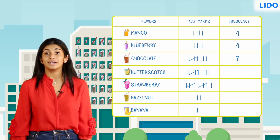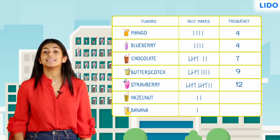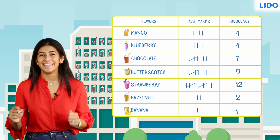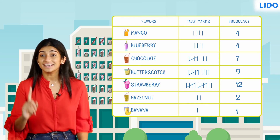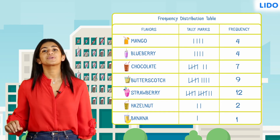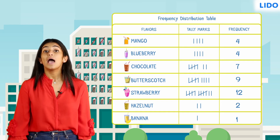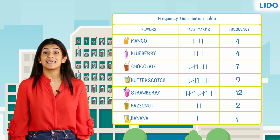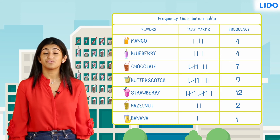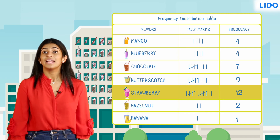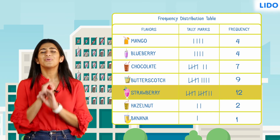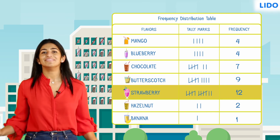Using the same method, we will complete the rest of the table. This is called a frequency distribution table. Based on this table, we can say that the highest frequency is for strawberry, which is twelve. Therefore, strawberry is the most liked flavour.